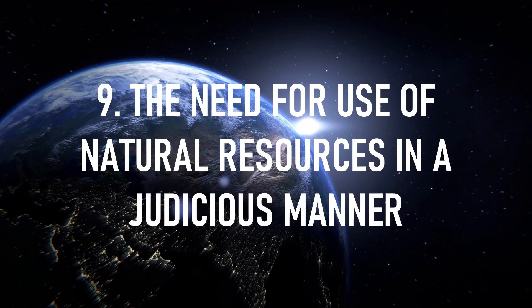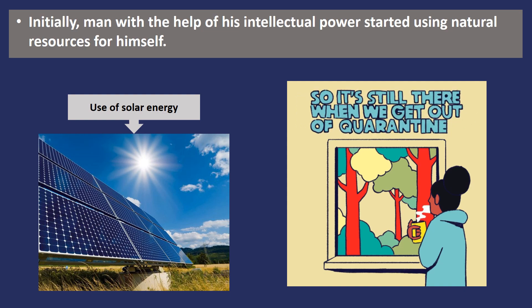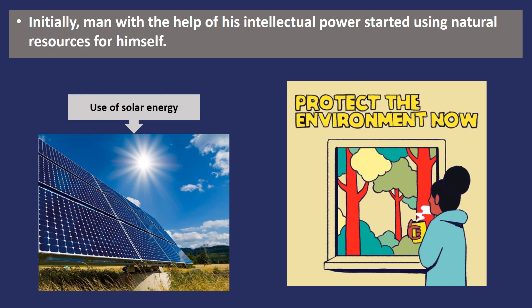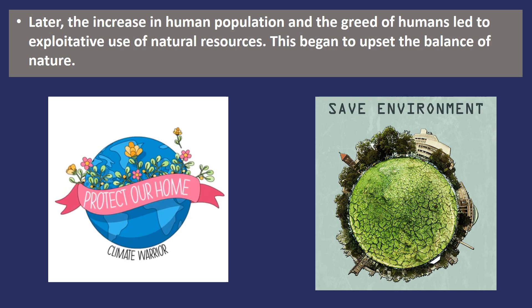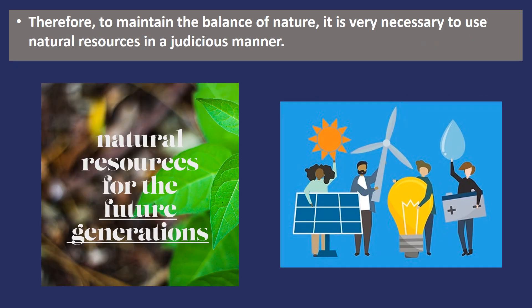Based on their needs, human beings make use of natural resources. However, man started using many of these resources for himself alone with the help of his intellectual power. Natural resources are depleting, and this is an alarming situation for us humans. Excessive use of natural resources has begun to upset the balance of nature. This is the right time for us to realize that careful use of natural resources is needed to maintain the balance of nature. Over-consumption can lead to depletion, hence we should take measures to save natural resources.